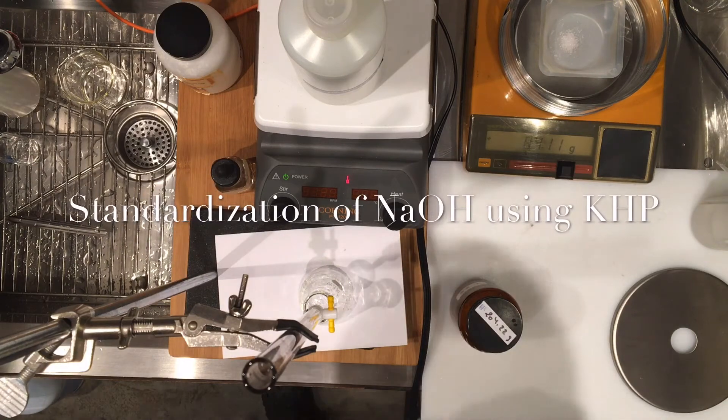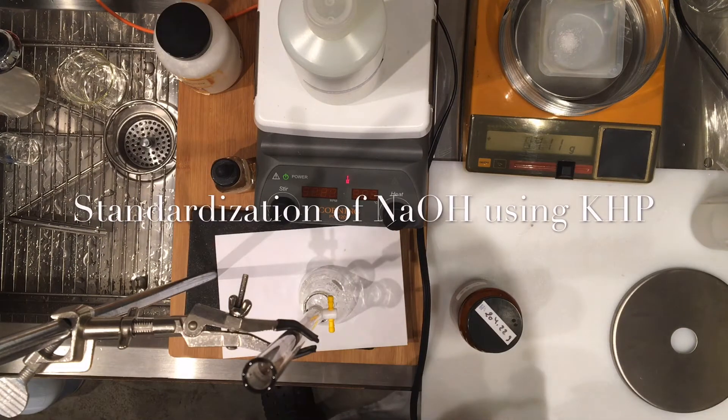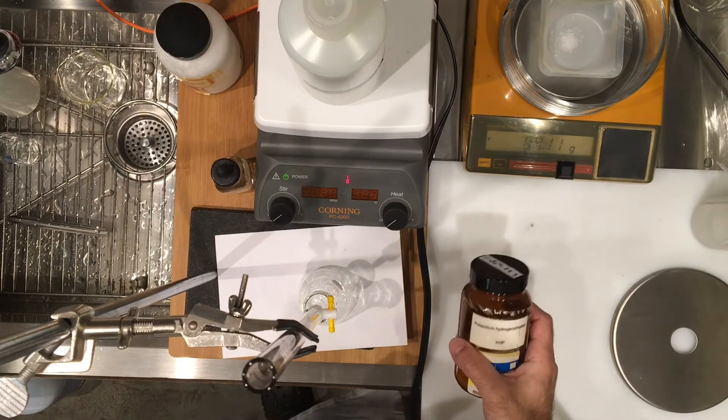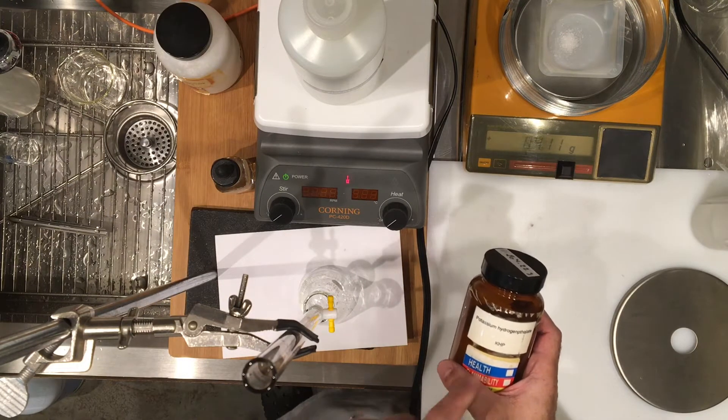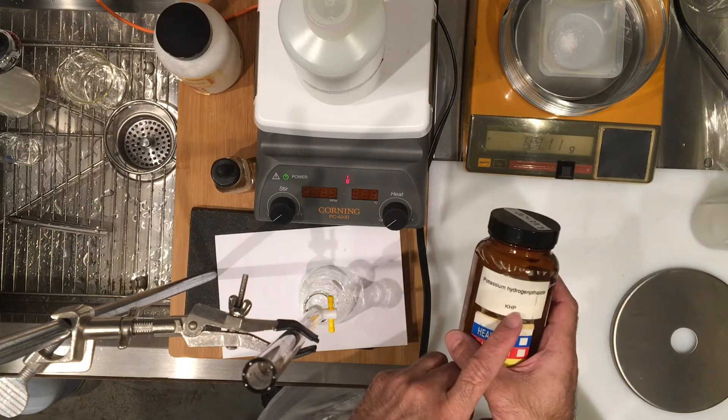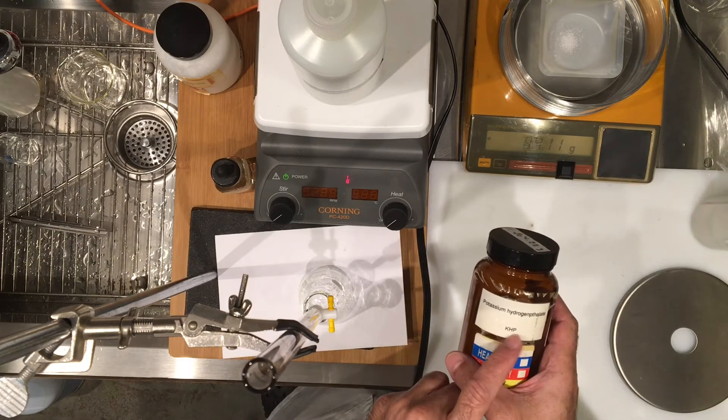We're going to show you how to standardize sodium hydroxide. So I have some potassium hydrogen phthalate. This substance is known for short as KHP, potassium hydrogen phthalate.